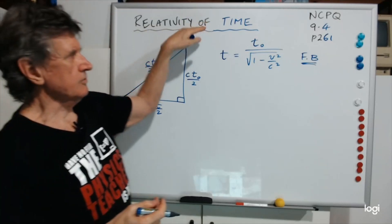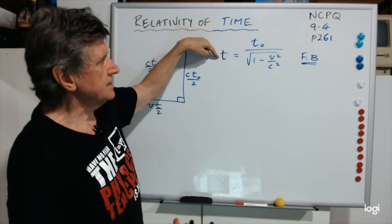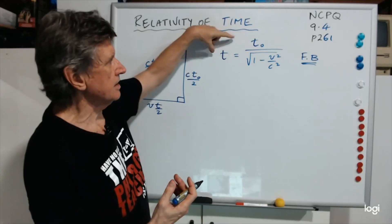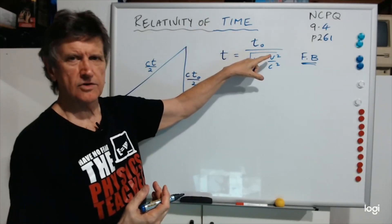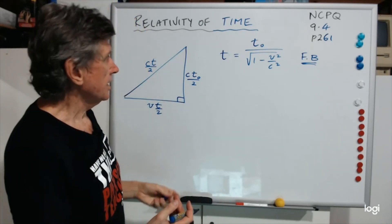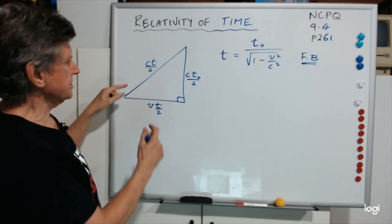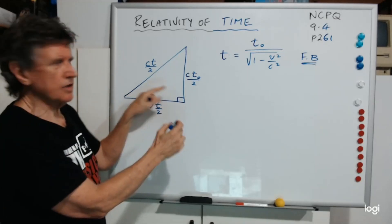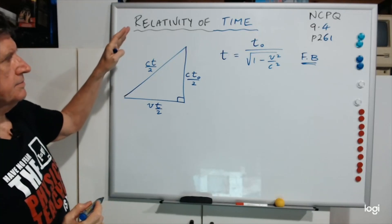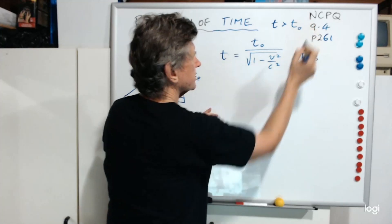The questions you'll get will be: given T0, calculate T; or given T, calculate T0, providing you know the velocity. Or you could get one where you're given both and have to calculate the velocity — that's a bit harder. Let me do one because I think it's worthwhile.